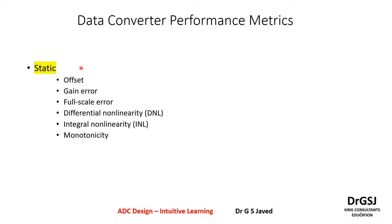Under the static domain, whether there is no input signal present or in the presence of an input signal, we will look at the following details: offset, gain error, full scale error, differential non-linearity or DNL, integral non-linearity or INL, and monotonicity. We will look into each one of them in the later classes.